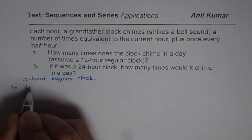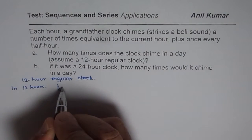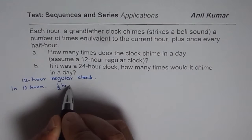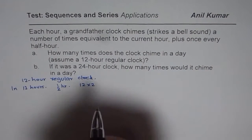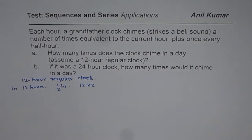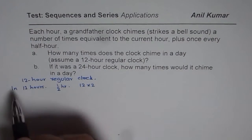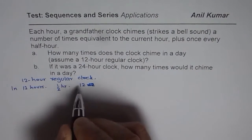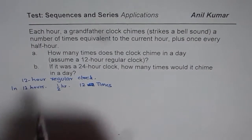In 12 hours, how many half-hours do you have? We have 12 times 2 half-hours. Since it chimes once every half hour, in each hour we have one half-hour chime. So in 12 hours we will have 12 half-hour chimes. We are considering only half a day.